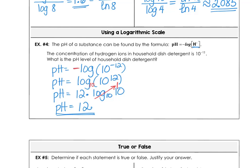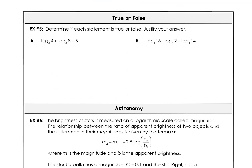Moving on to example 5 — we can work these two different ways. Method one: log base 2 of 4 is 2 (since 2 squared is 4), and log base 2 of 8 is 3 (since 2 cubed is 8). So 2 plus 3 is 5. Method two using properties: the sum of two logs is the log of the product — log base 2 of 4 times 8, which is log base 2 of 32. And 2 to the 5th is 32, so the answer is 5. Both methods confirm this statement is true.